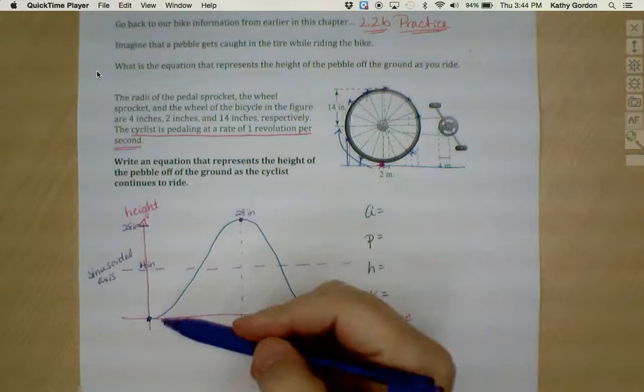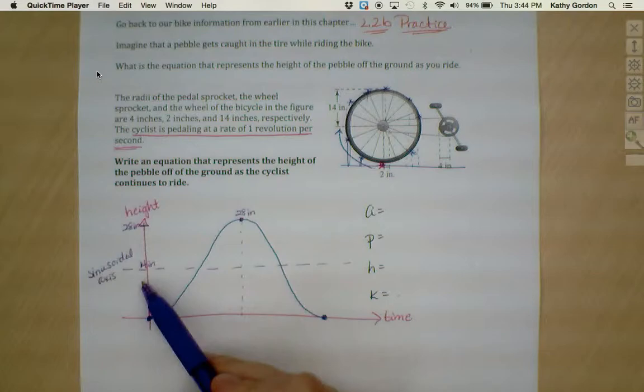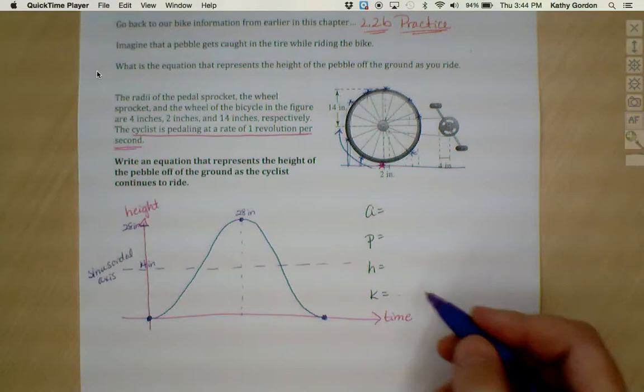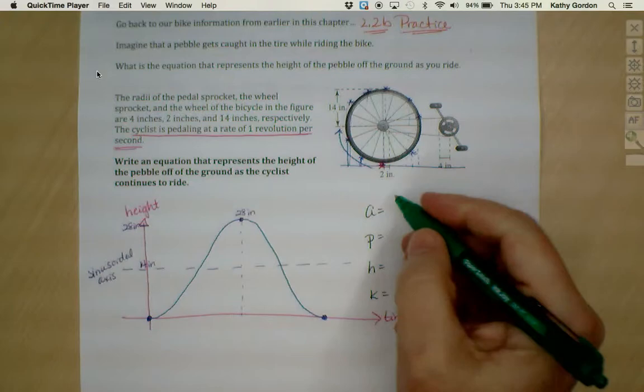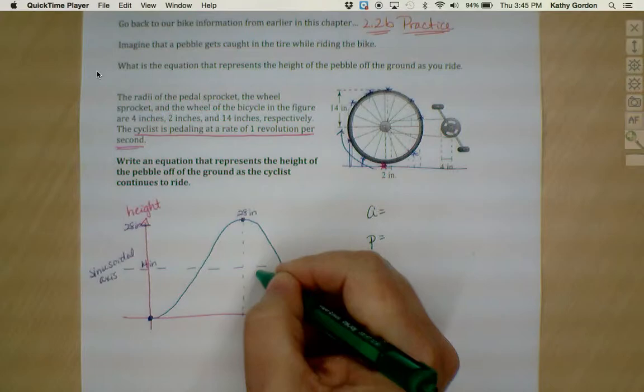That also means then that halfway is where my sinusoidal axis has to be. Halfway between 0 and 28 is going to be 14. In this case it actually just ends up being the radius of the wheel. We know it's a total distance of 28 that my pebble can go up. Halfway in between is going to be 14. That's where my sinusoidal axis is going to be. So that's also going to give me my K value.